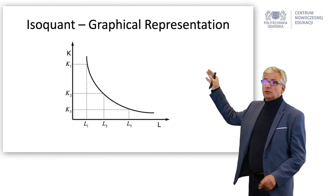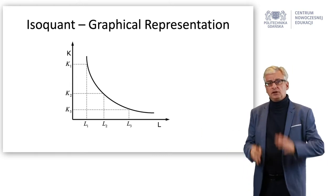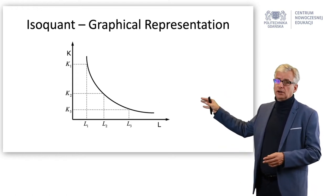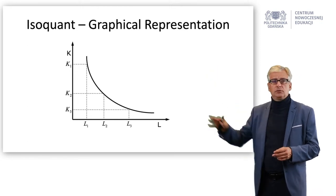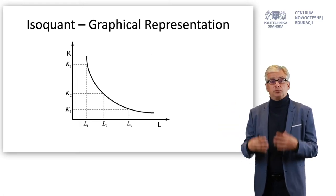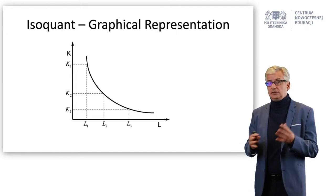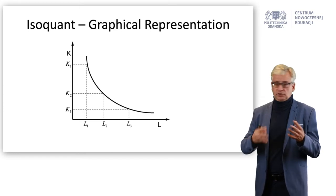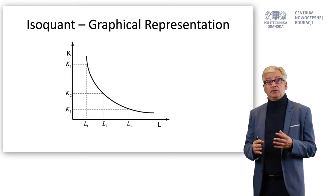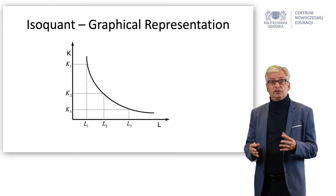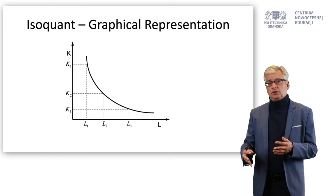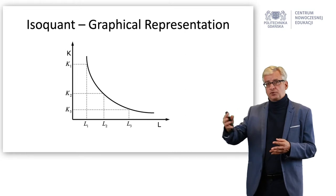This is the graphical representation of an isoquant. We have two axes because we have two resources — two variables: labor on the horizontal axis and capital on the vertical one. This curve is the collection of all the points that allow you to produce a given output. I will show you three points here — three points out of many on this curve — and these represent three technologies. The first technology requires quite a lot of capital, K1, and just a little of labor, L1, and it allows to produce a certain output.